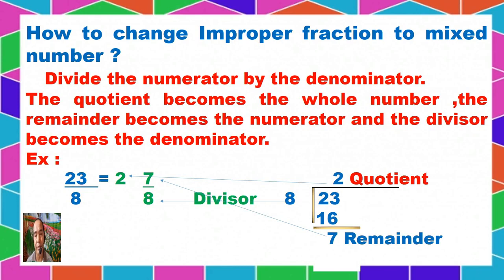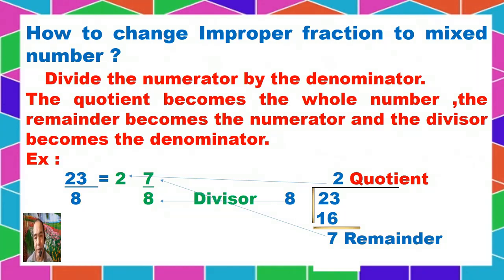Now let's have the example taken from your module. We have 23 over 8. As you can see, this fraction is an improper fraction. Why? Because the numerator is bigger than the denominator. So we will divide 23 divided by 8.